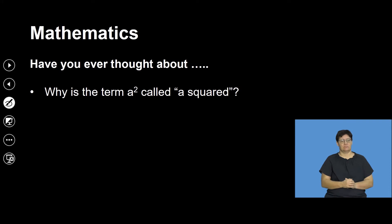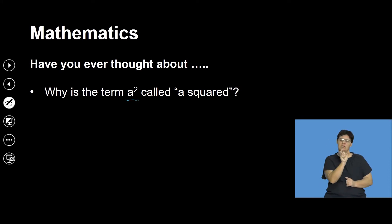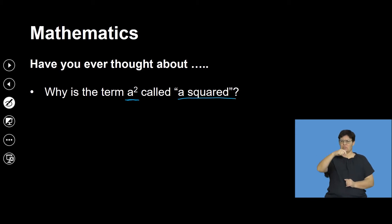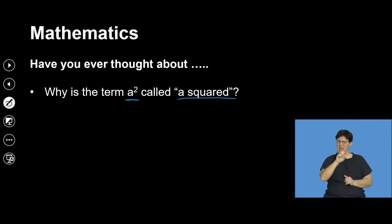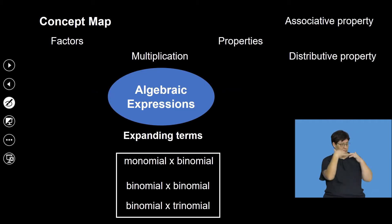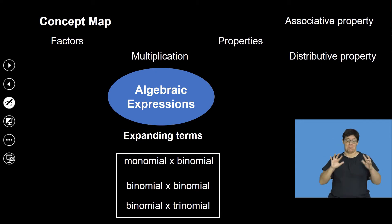Have you ever thought about why the term a to the exponent of 2 is called 'a squared'? I'm calling it a to the exponent of 2 because under exponents, that's what we call it. But normally people say 'a squared.' Why is that the case? Think about that — I'll show you why at a later stage.